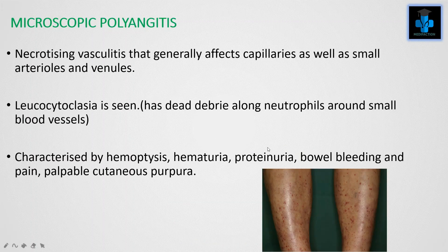Next is microscopic polyangiitis, which comes under small vessels. These are necrotizing vasculitis that generally affect capillaries as well as small arterioles and venules. Leukocytoclasia is seen — in leukocytoclasia, we see dead neutrophil debris around small blood vessels. These are characterized by hemoptysis, hematuria, proteinuria, bowel bleeding and pain, along with palpable cutaneous purpura.